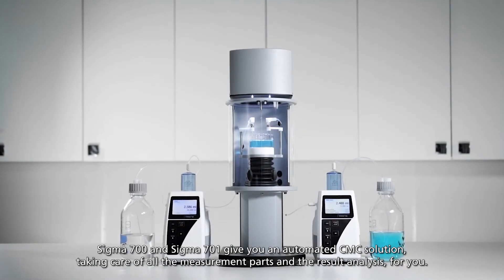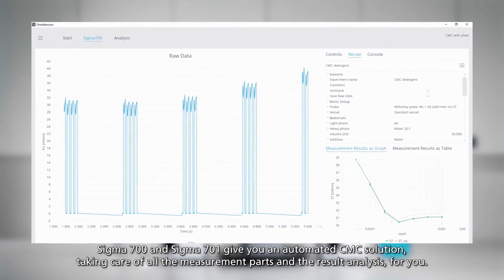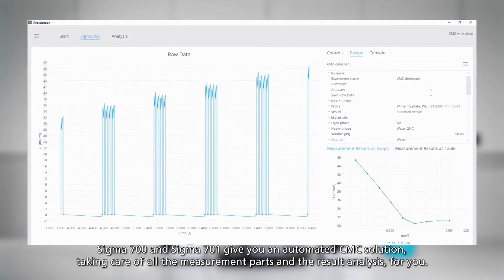Sigma 700 and Sigma 701 give you an automated CMC solution, taking care of all the measurement parts and the result analysis for you.